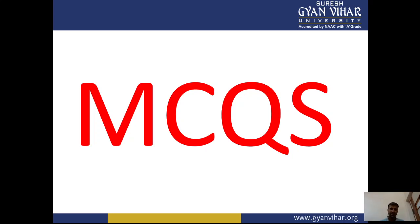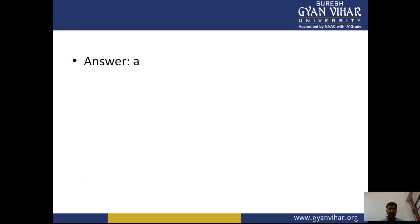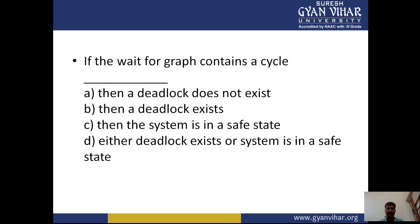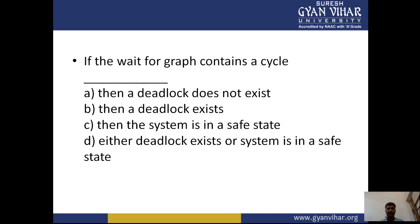MCQ 1: The wait-for graph is a deadlock detection algorithm applicable when — all resources have a single instance. Answer: A. MCQ 2: If a wait-for graph contains a cycle — then deadlock exists. Answer: B.